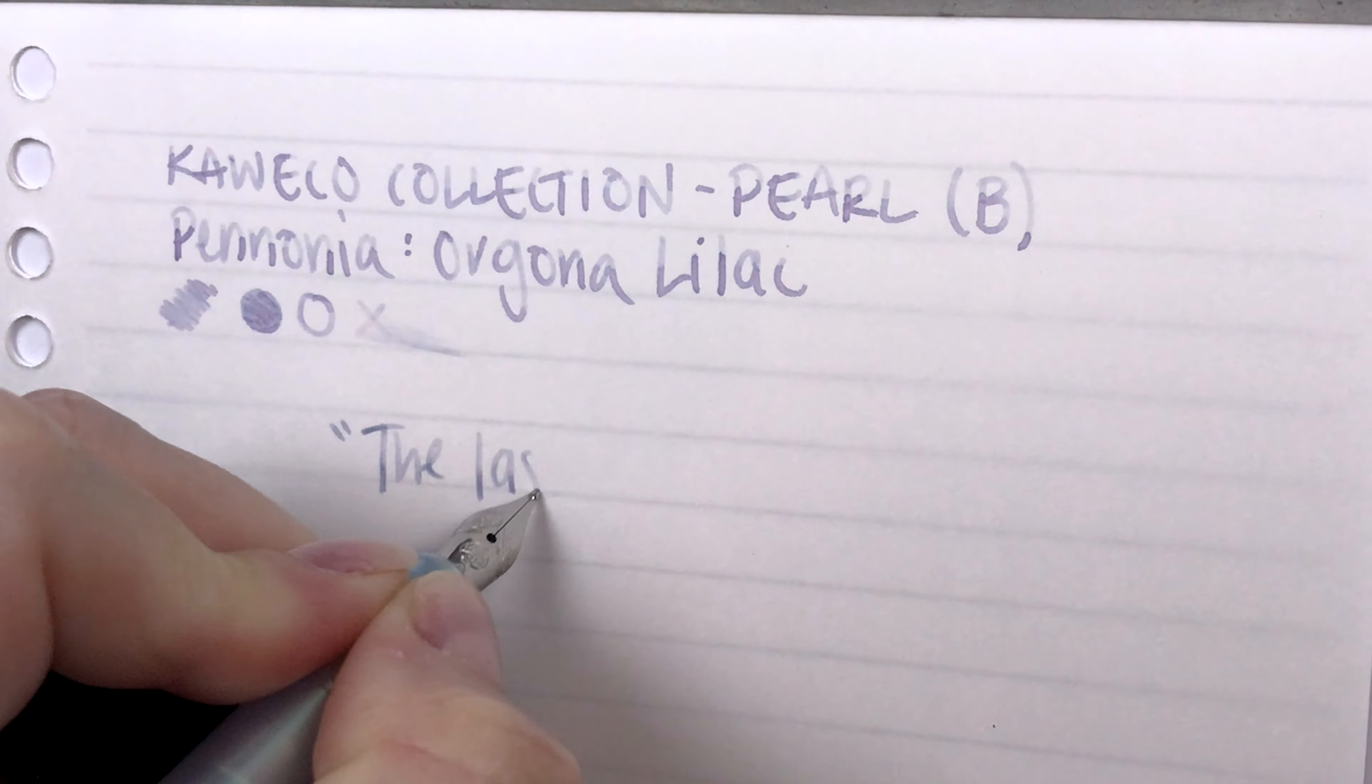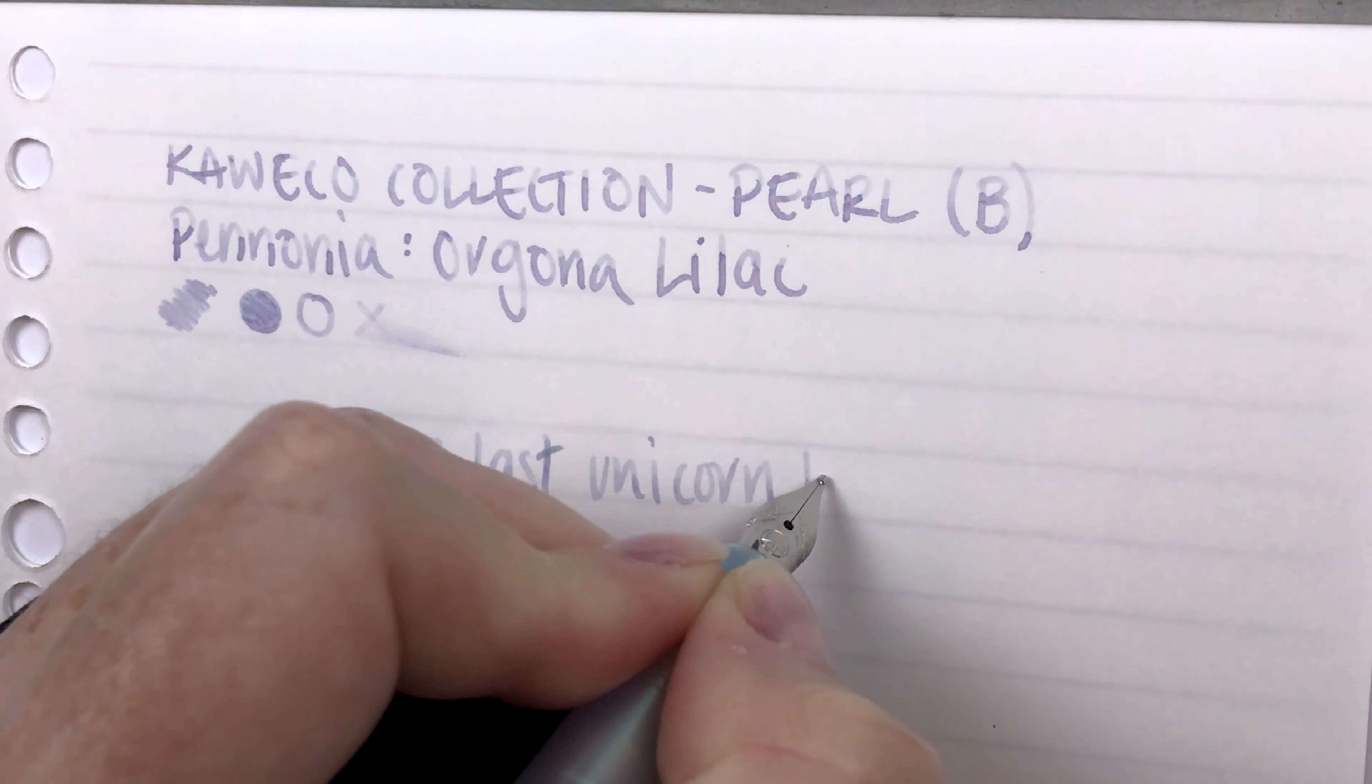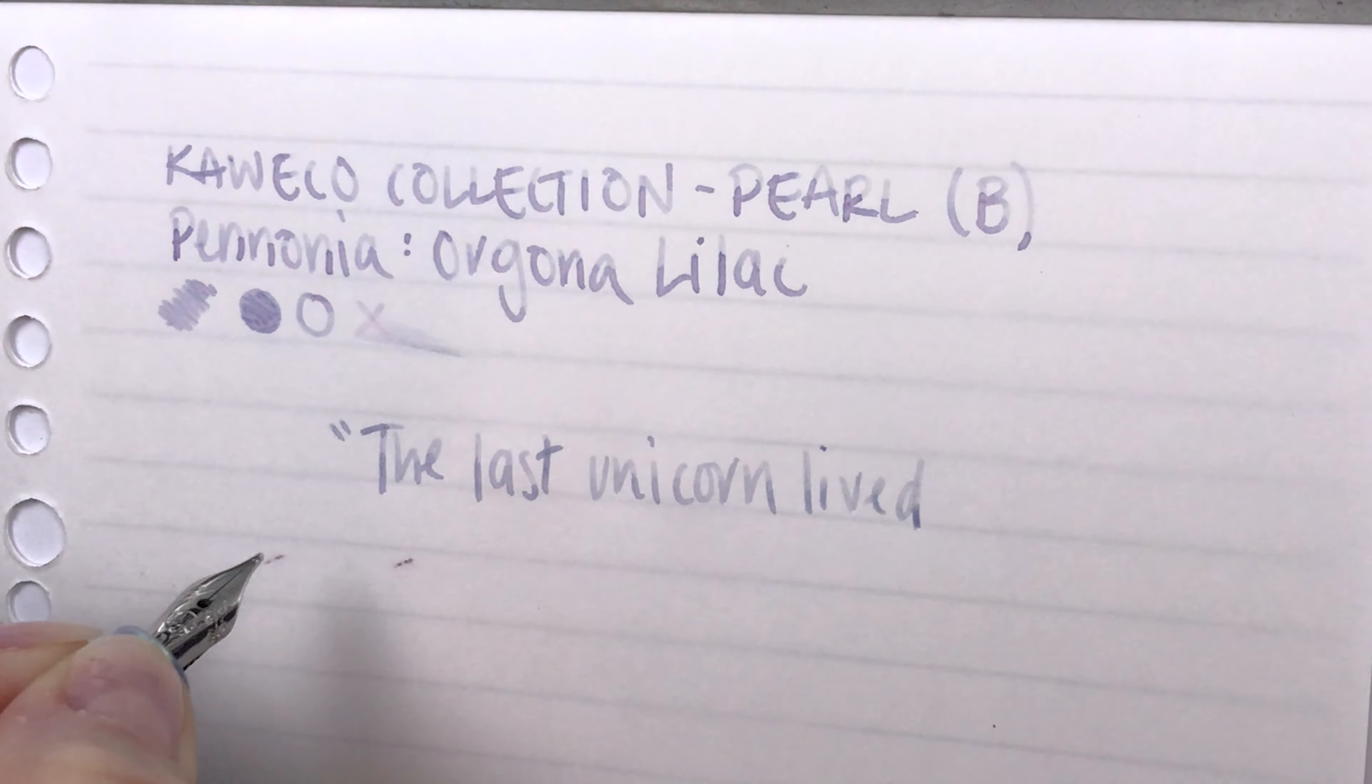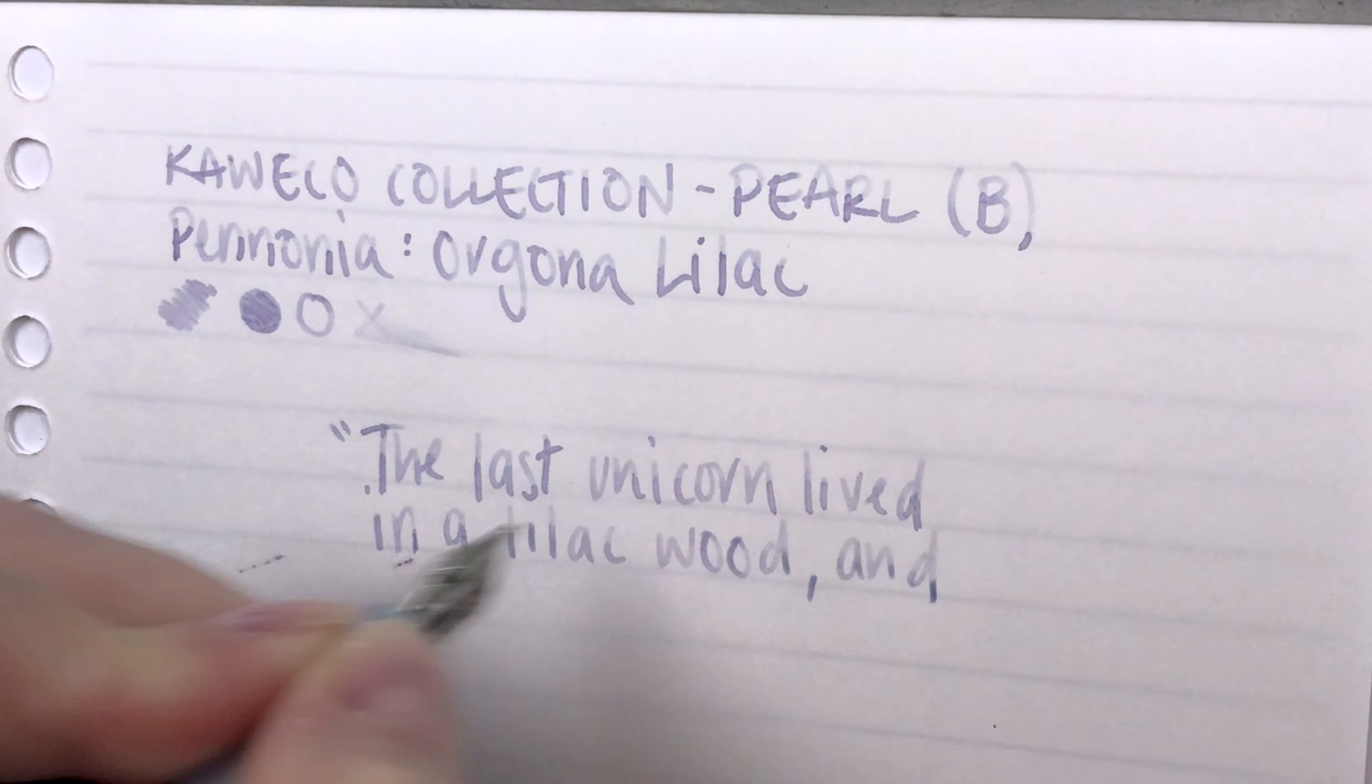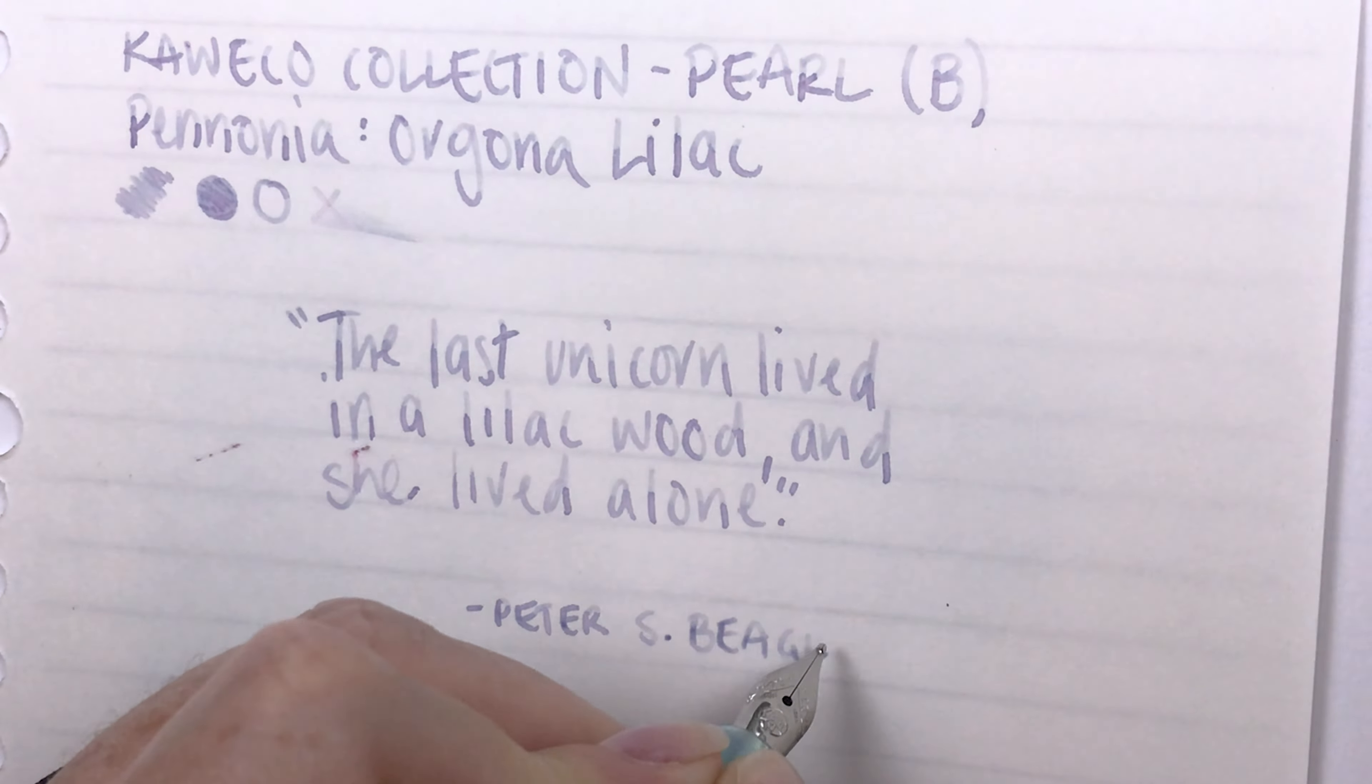It's kind of like some of the Sailor inks that just look amazing when swatched out especially with a glass nib because it lays down a lot of ink but then when you write with it in a fountain pen depending on the flow of the pen and the nib size it really is kind of hard to read.